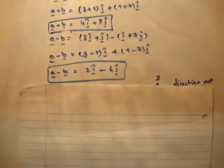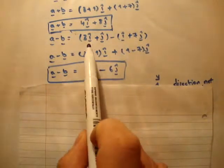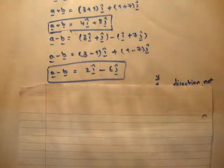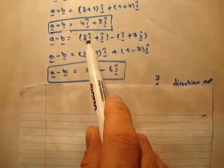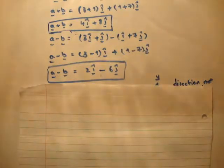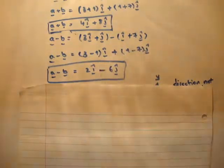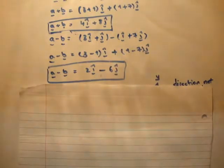Next, we have to find what a minus b equals. In the same fashion, we write down a, we write down b, rearrange to put the i hats and j hats together, and carry out our algebra. So 3 minus 1 and 1 minus 7, to get that a minus b equals 2i hat minus 6j hat.